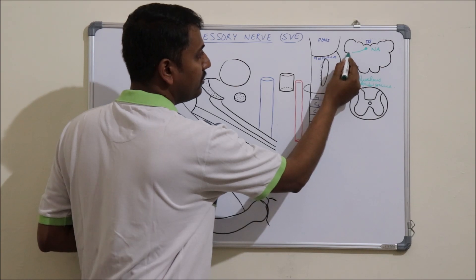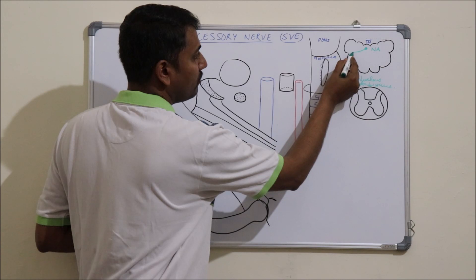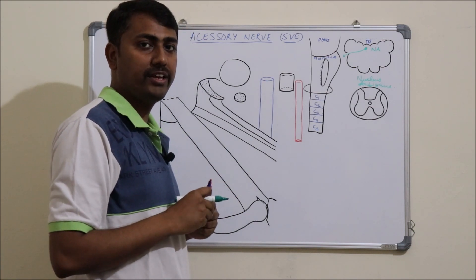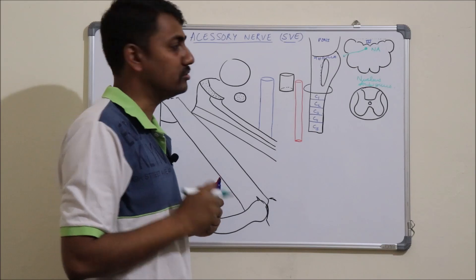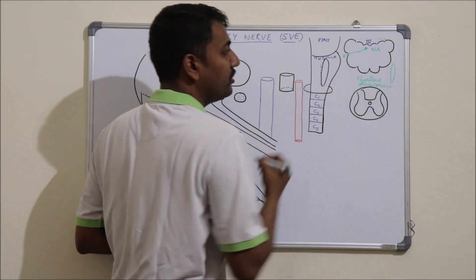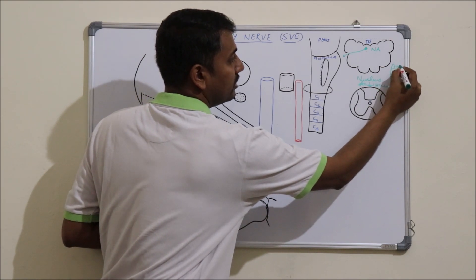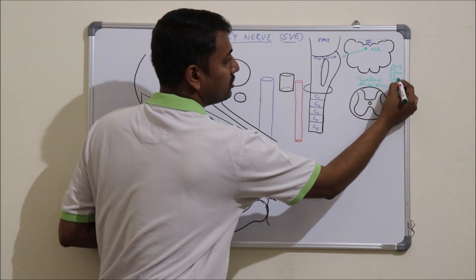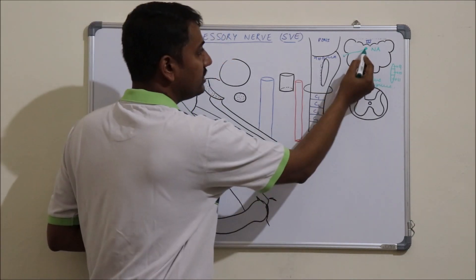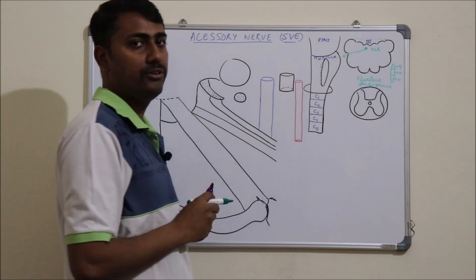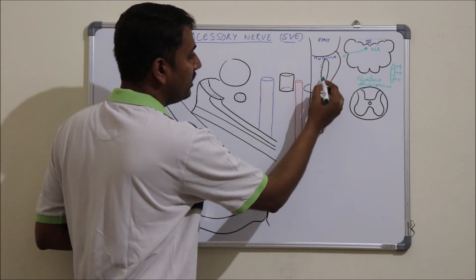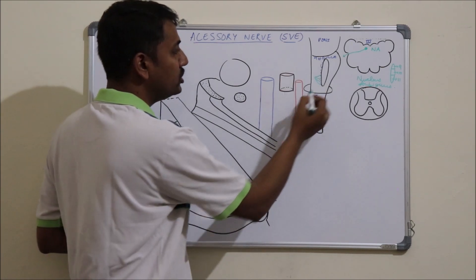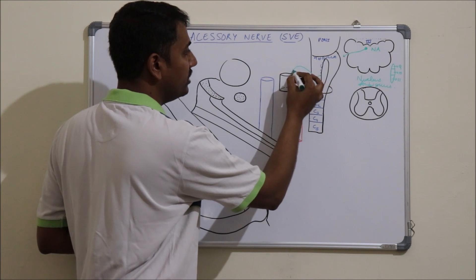The cranial part comes out from the posterolateral sulcus of the medulla. Nucleus Ambiguus also gives rise to the 9th (glossopharyngeal) and 10th (vagus) nerves. In a longitudinal section of Nucleus Ambiguus, the upper part gives rise to the 9th cranial nerve, the middle part gives rise to the 10th cranial nerve, and the lower part gives rise to the 11th cranial nerve. The cranial part emerges as 4 to 5 rootlets which join to form the cranial part of the accessory nerve.